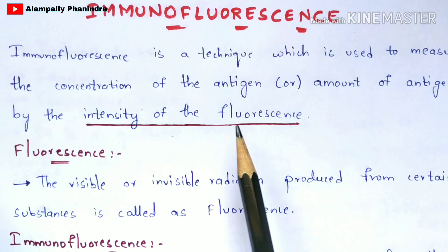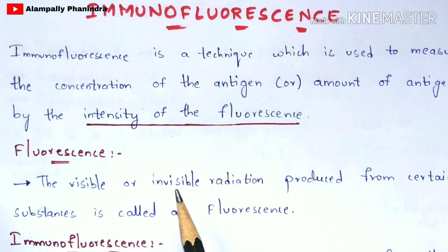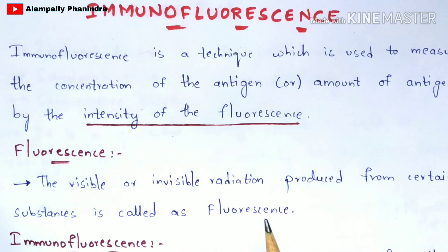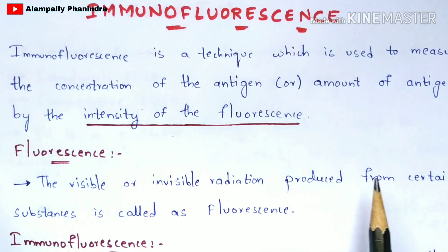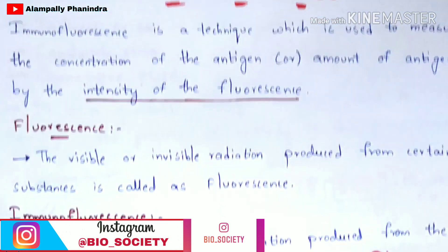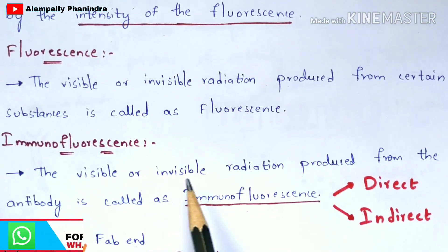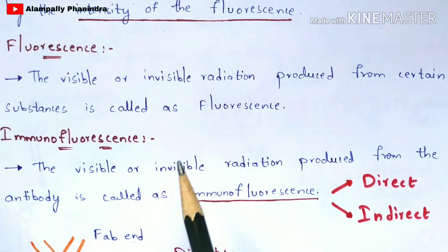So what is meant by fluorescence? The visible or invisible radiation produced from certain substances is called fluorescence. And what is meant by immunofluorescence? The visible or invisible radiation produced from the antibodies is called immunofluorescence.